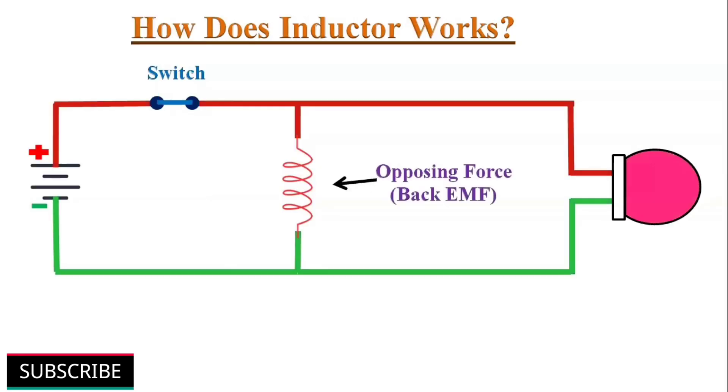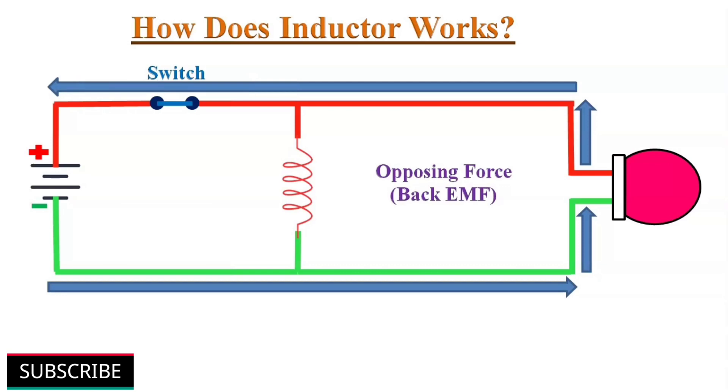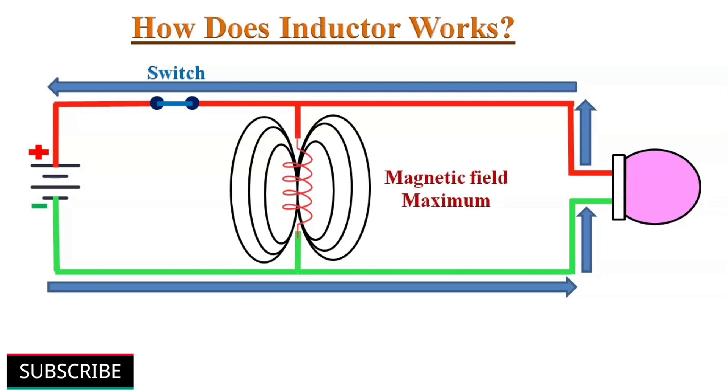When we power on this circuit, there will be a change in flow of current. The inductor tries to oppose this change, so it creates an opposing force known as back EMF. Some current manages to flow through the inductor, so it generates a magnetic field which gradually increases. Once the magnetic field reaches its maximum, the current stabilizes. Then the inductor doesn't resist the flow of current and acts like a normal piece of wire.